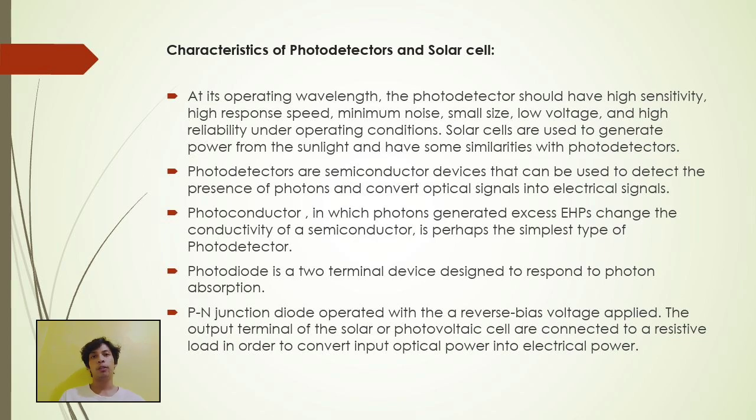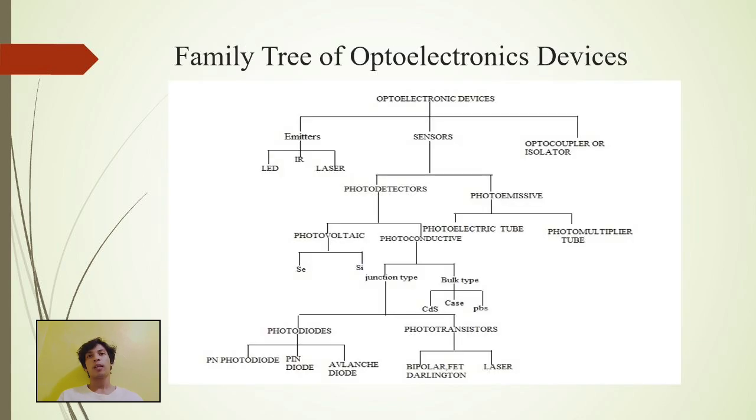Photoconductor generated excess EHPs changes conductivity of semiconductor, is perhaps the simplest type of photodetector. Photodiode is a two-terminal device designed to respond to photon absorption. PN junction diode operated with a reverse bias voltage applied. The output terminal of the solar or photovoltaic cell are connected to a resistive load in order to convert input optical power into electrical power.